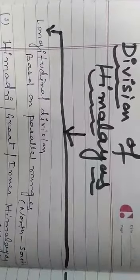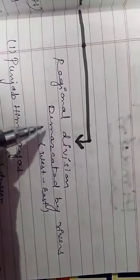In the previous class, we had already learned about the features of Himalayas. Today, we will learn about the division of Himalayas: the longitudinal division of Himalayas based on parallel ranges, and the regional division of Himalayas demarcated by rivers.